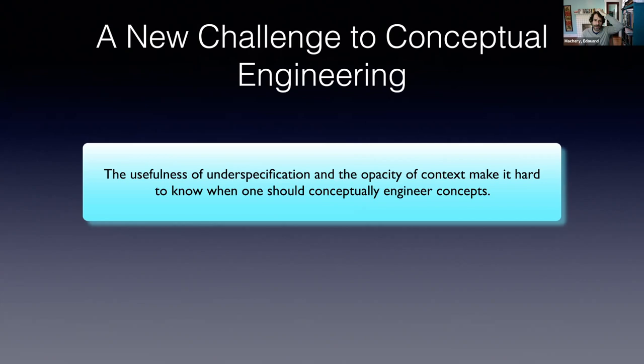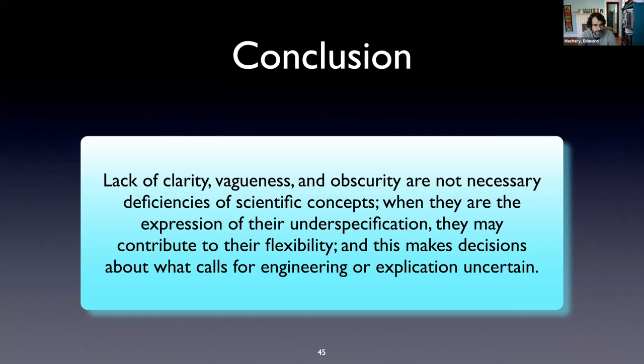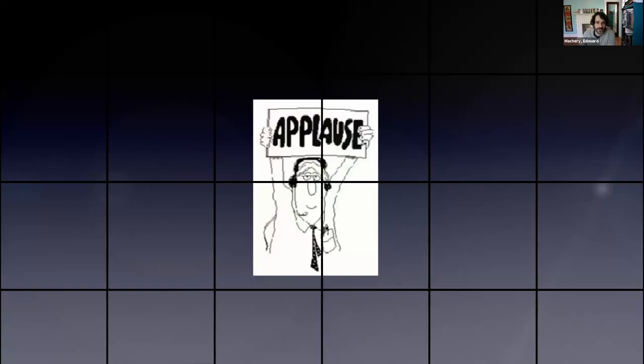The fact that we have all these attempts — some that stick, some that don't — really tells us that scientists are not very good at recognizing the right context, and that's because it's just opaque which context calls for engineering. We end up with a new challenge to conceptual engineering: the usefulness of underspecification and the opacity of context make it hard to know when one should conceptually engineer concepts. The lack of clarity, vagueness, and obscurity are not necessarily deficiencies of scientific concepts. When they are the expression of underspecification, they contribute to flexibility — and this makes decisions about what calls for engineering uncertain. Thank you.